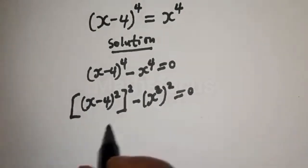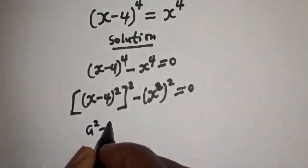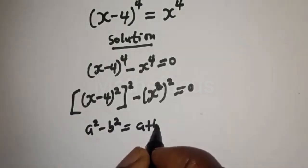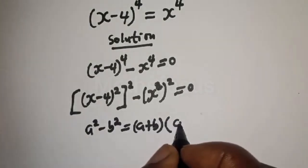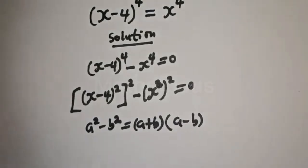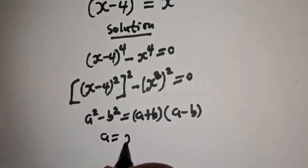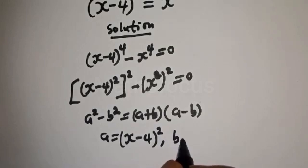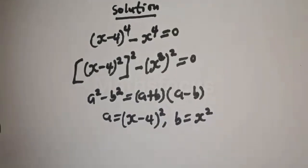This is a perfect square difference. Take note that a squared minus b squared is equal to (a plus b) multiplied by (a minus b). From this equation, a is equal to (x minus 4) squared and b is equal to x squared. Let's substitute.